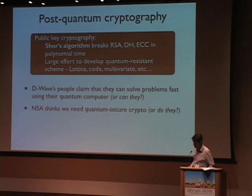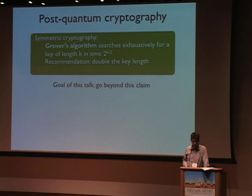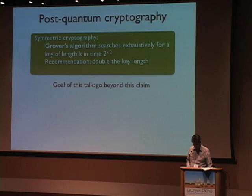But this is all about public key cryptography. If you look at the situation in symmetric cryptography, it's quite different. In general, the belief is that there is one algorithm, which is Grover's algorithm, which allows you to make generic attacks on these schemes. And Grover's algorithm only has a quadratic speedup. So the way to restore security of symmetric cryptosystems in a quantum world is just to double the key length. That's something I heard at CureCrypt two years ago, exactly this sentence. And the goal of this talk is to show you that we can go beyond this claim and show some quantum attacks also on symmetric cryptosystems.